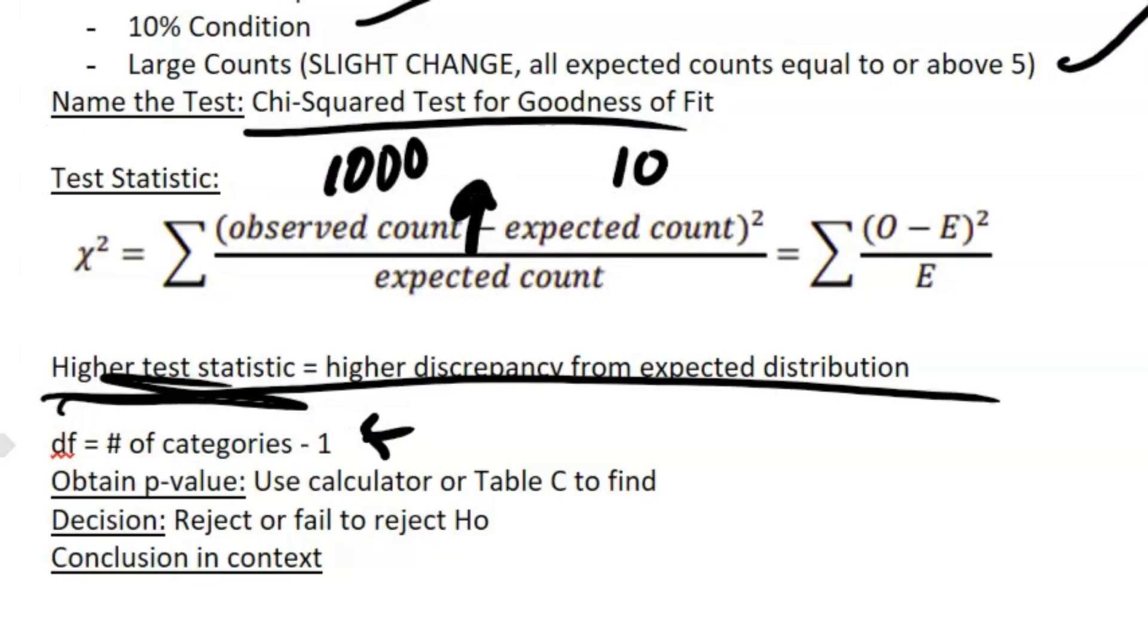Now we're talking about degrees of freedom. So instead of our sample size minus one, it's just the number of categories we have minus one. In terms of M&Ms, it's like each color of M&Ms. If I have seven colors of M&Ms, then it'd be seven minus one; degrees of freedom is six.